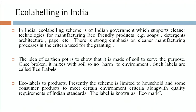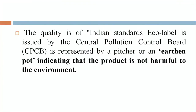Eco-labeling in India: the eco-labeling scheme is an Indian government scheme that supports cleaner technologies for manufacturing eco-friendly products, such as soap, detergent, paper, etc. The idea of the earthen pot symbol is to show that it is made of soil, serves its purpose, and once broken, mixes with soil — so no harm to the environment. Such labels are called eco-marks. The scheme is currently limited to household and consumer products meeting certain environmental criteria along with quality requirements of Indian standards. The eco-mark label is issued by the CPCB and is represented by a pitcher or earthen pot indicating the product is not harmful to the environment.